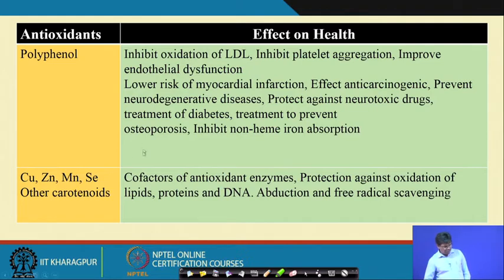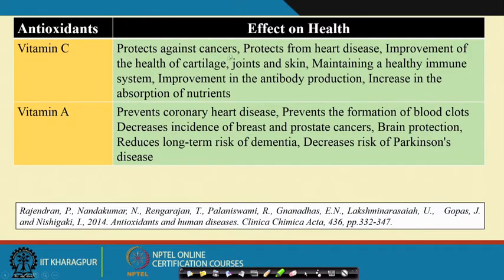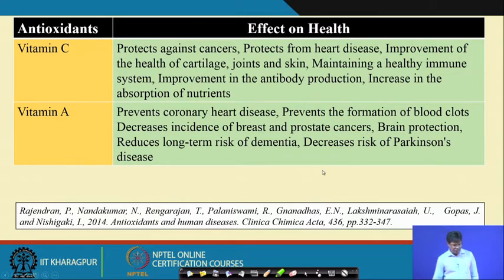Copper, zinc, manganese, selenium, and other carotenoids are co-factors of antioxidant enzymes providing protection against oxidation of lipids, proteins, and DNA, and have free radical scavenging activity. Vitamin C protects against cancers and heart disease, improves the health of cartilage, joints, and skin, maintains a healthy immune system, improves antibody production, and increases absorption of nutrients. Vitamin A prevents coronary heart disease, prevents blood clot formation, decreases incidence of breast and prostate cancers, provides brain protection, reduces long-term risk of dementia, and decreases risk of Parkinson's disease.